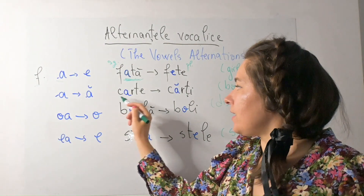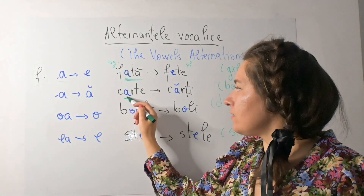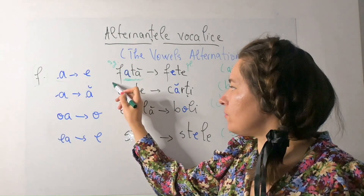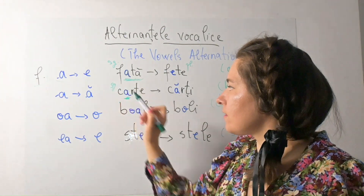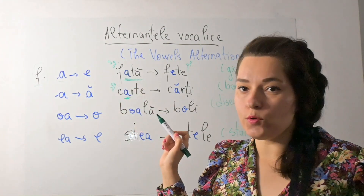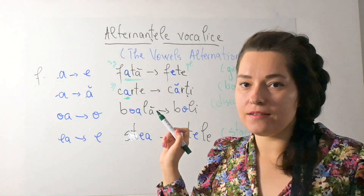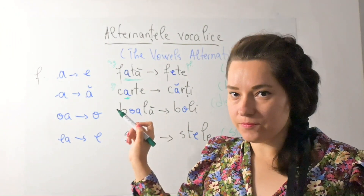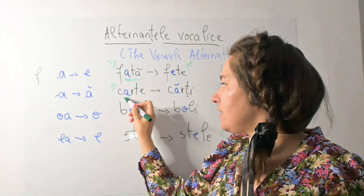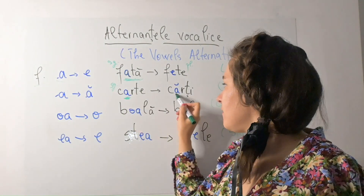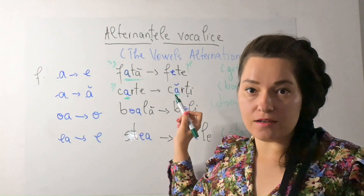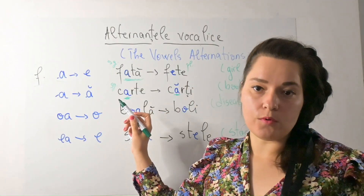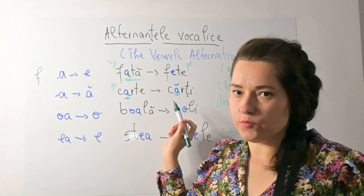Carte — we have 'a' in the middle, singular. The plural form will be cărți. So 'a' in the middle will be changed into 'ă'. Book — a book, some books.